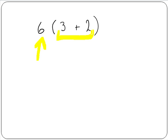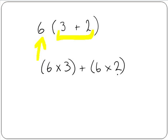In this example, 6 by 3 plus 2, it means we must multiply the 6 by the 3 and the 6 by the 2. This gives us 18 plus 12 equals 30.